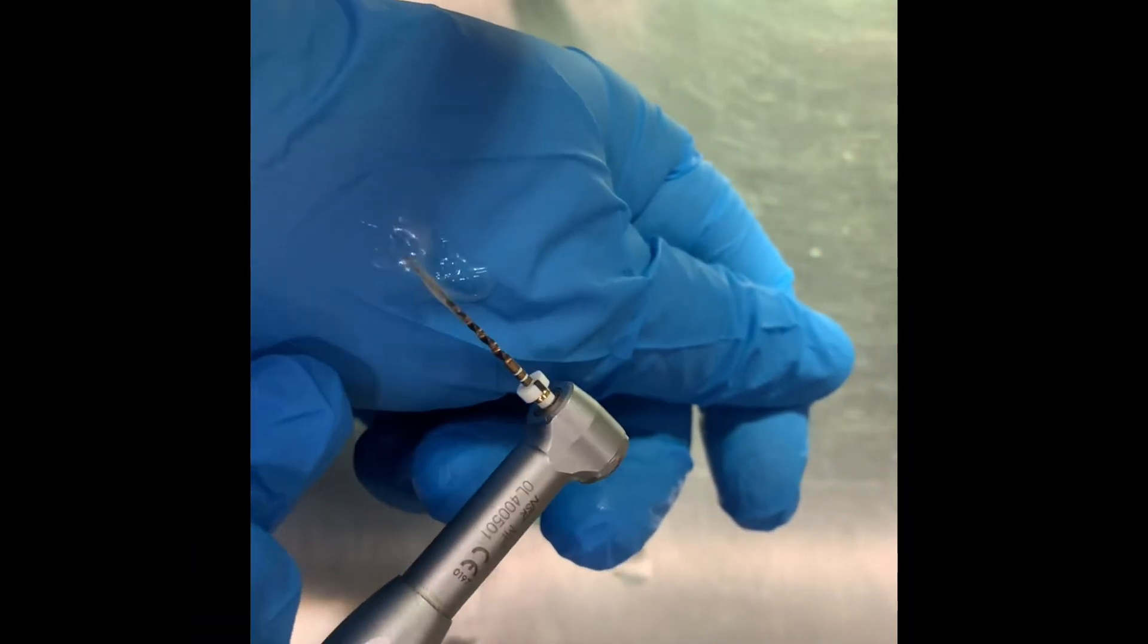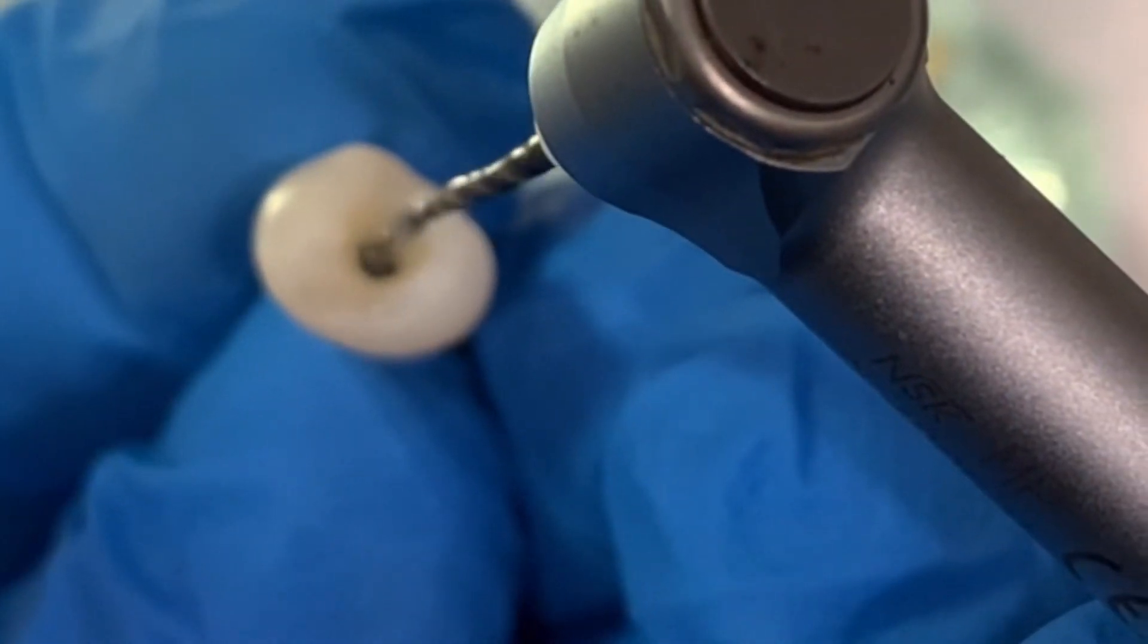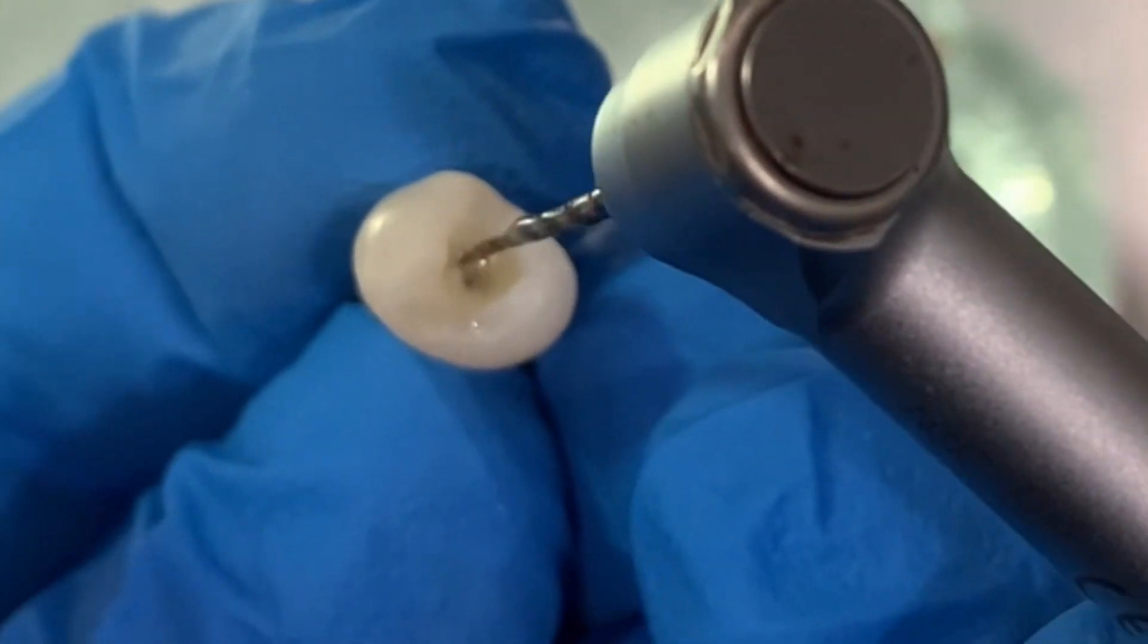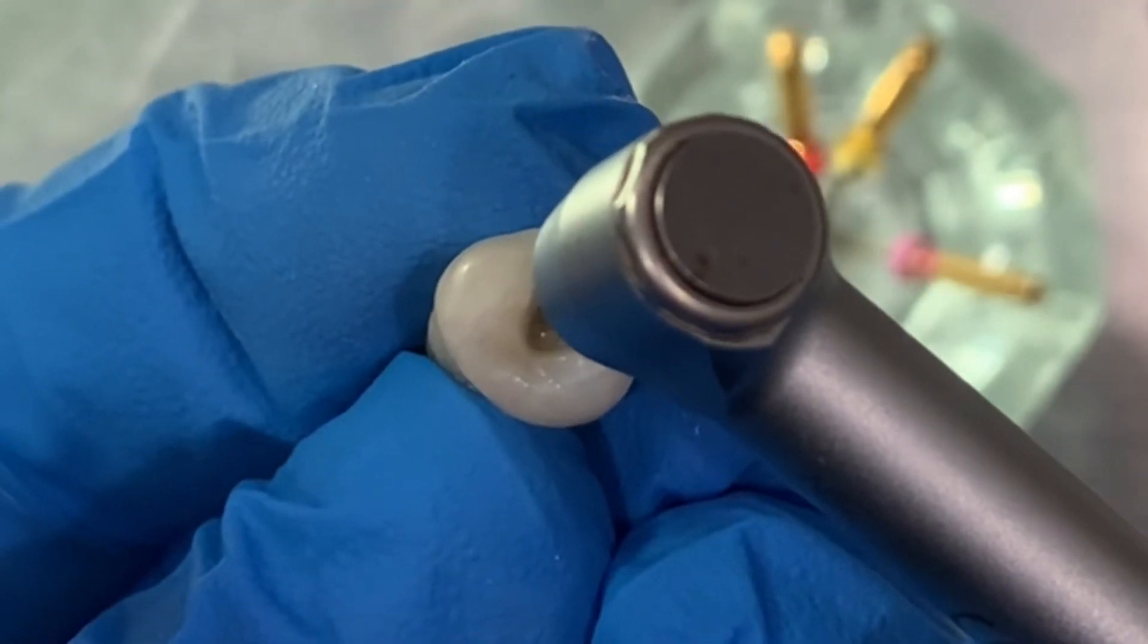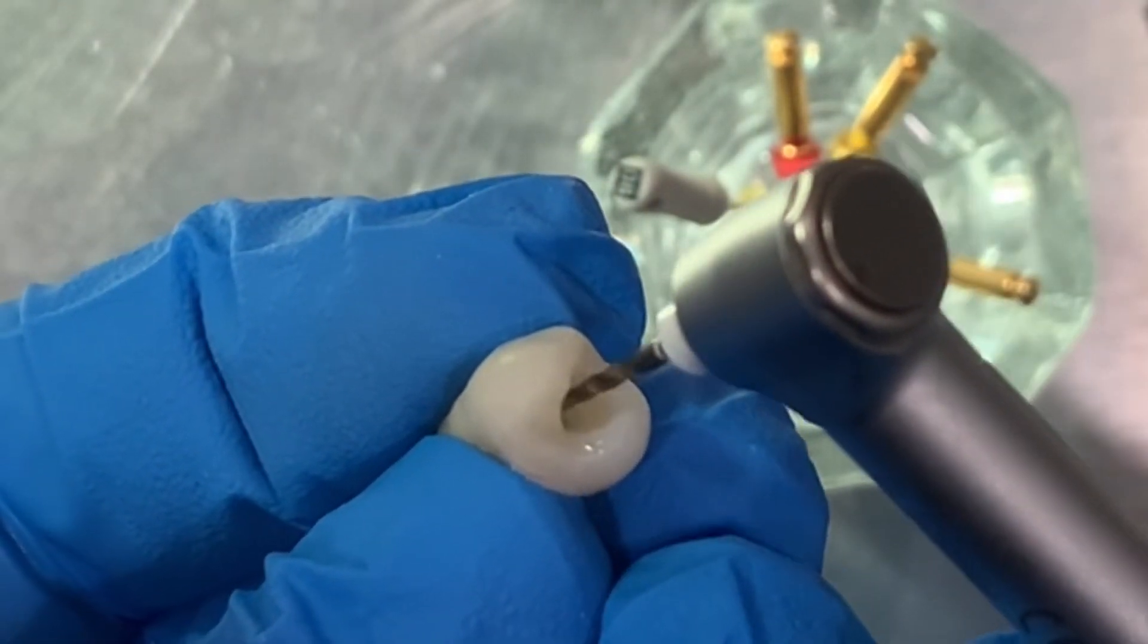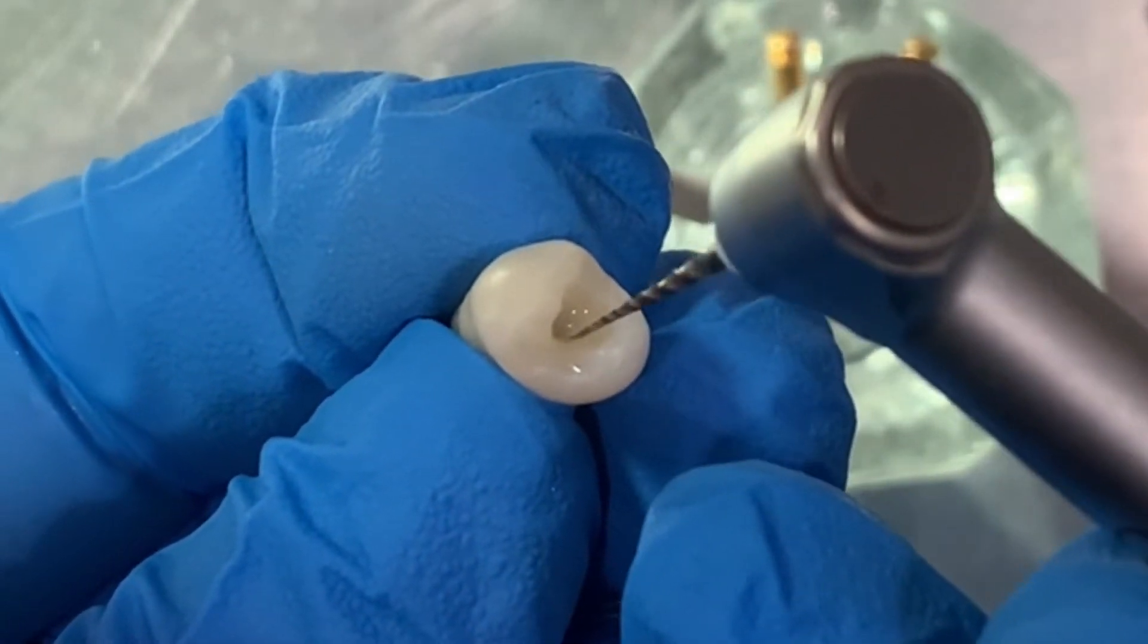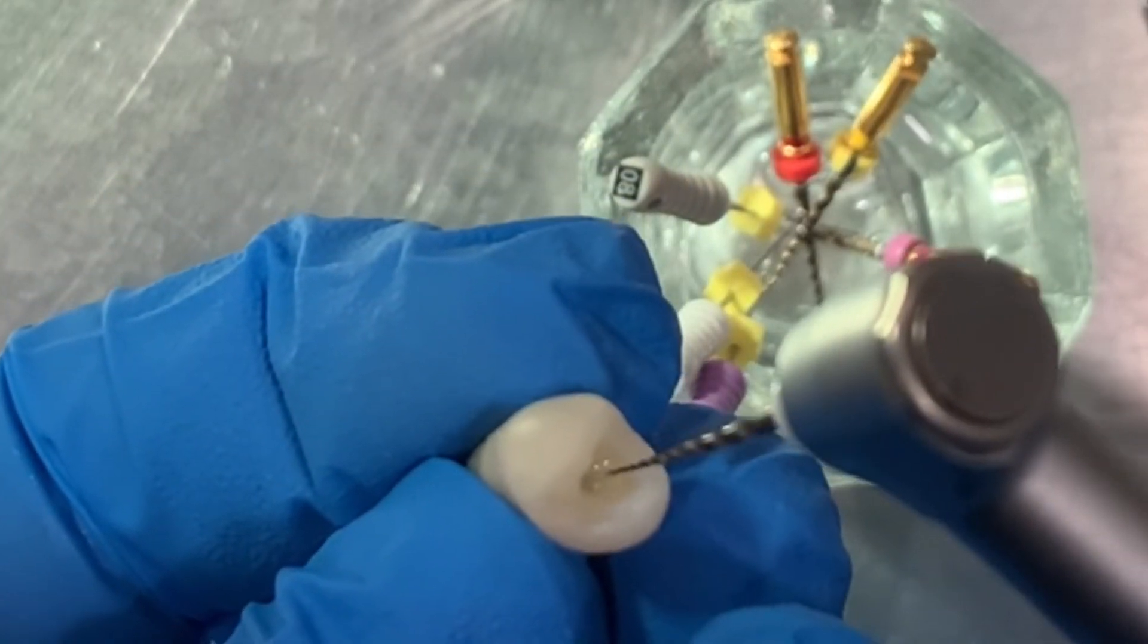The S1 enlarges the coronal one-third and the S2 enlarges the middle one-third. Together they prepare the coronal two-thirds of the canal. However, at the same time they progressively enlarge the apical one-third as well. You can see how we take in the file right till the working length, pause for a moment, and then pull it out in a brushing action.